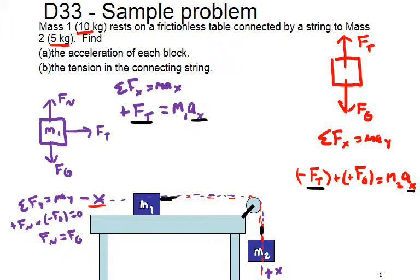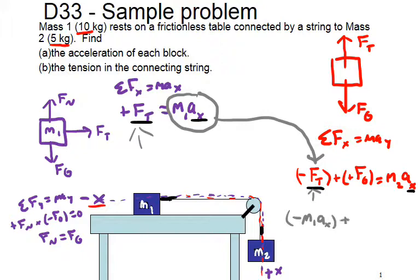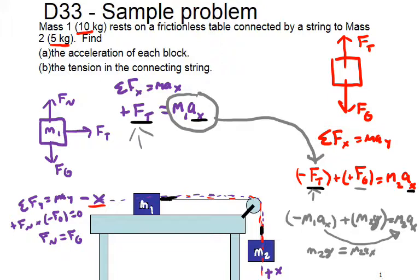What we can do is take the tension value from mass one's equation and substitute it into mass two's equation, since we know the tension felt throughout the string is the same. Substituting in, we keep the negatives: negative m1 times a in x, plus m2 times g equals m2 times a in the x. Now the only unknown is acceleration. Bringing terms together: m2g equals m2a plus m1a.